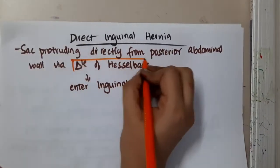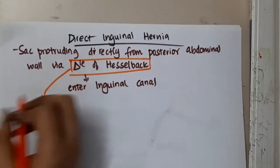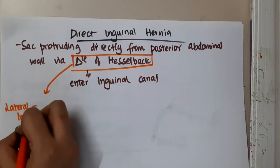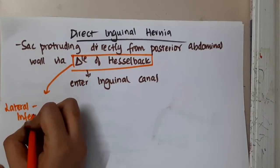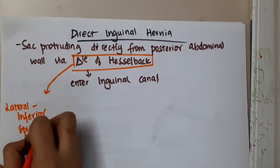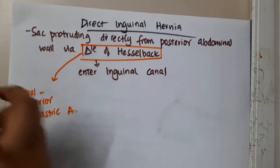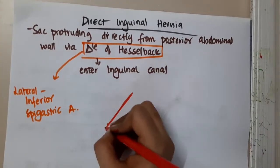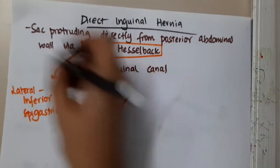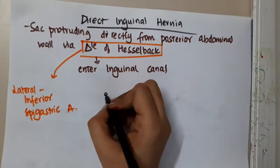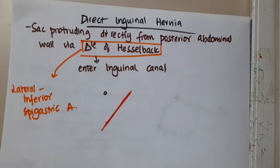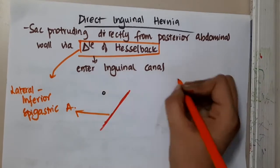Now let us learn the boundaries of the triangle of Hesselbach. Laterally, you will see the inferior epigastric artery — this is the lateral boundary, the inferior epigastric artery.